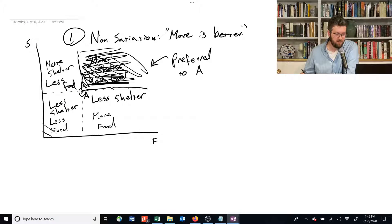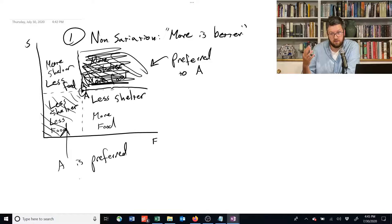Anything down here in this lower corner, A is preferred to, because all of those bundles, everything down there has less food and less shelter.